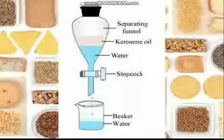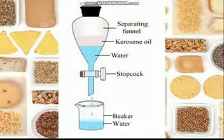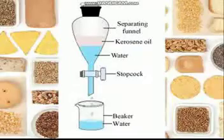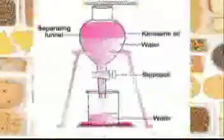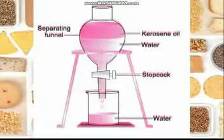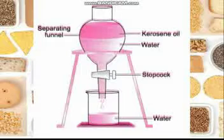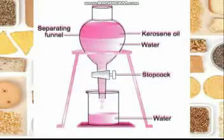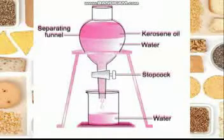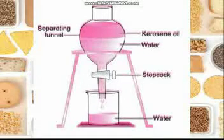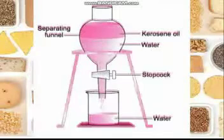In the diagram of the separating funnel, the first layer is kerosene oil and the second layer is water. With the help of the stopcock you take water down. To do this activity, pour a mixture of oil and water into the separating funnel and leave it undisturbed for some time. You will see a clear layer of oil over the water. Then turn the stopper of the separating funnel open and allow the water to flow out into a beaker placed below.